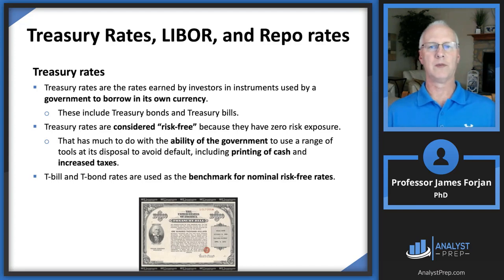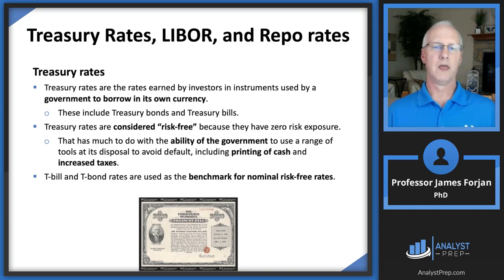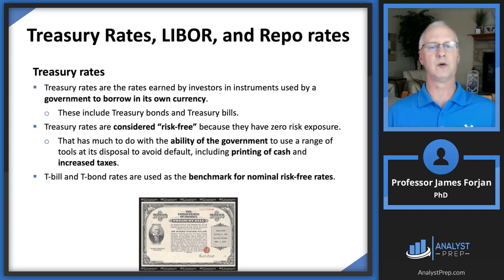The US federal government spends a lot of money, which means it needs to either raise a lot in tax revenues or borrow a lot — and it does both. Treasury yields or treasury rates are the rates earned by investors in instruments used by the federal government to borrow in its own currency: treasury bonds, treasury notes, and treasury bills. These are considered to be default risk-free because if you buy a one-month treasury bill or a 30-year treasury bond, you are absolutely guaranteed to receive any interest payments and then the par value at maturity.